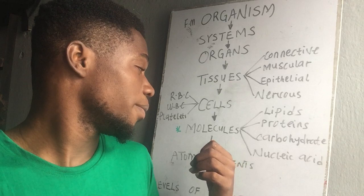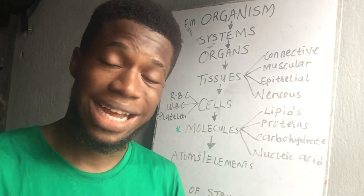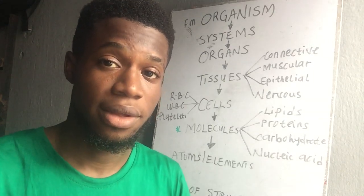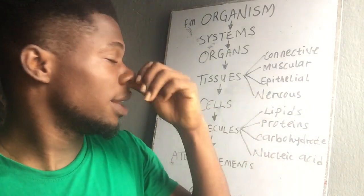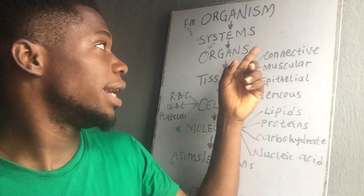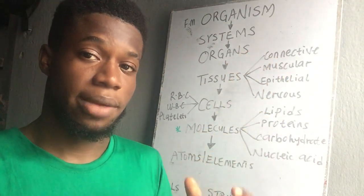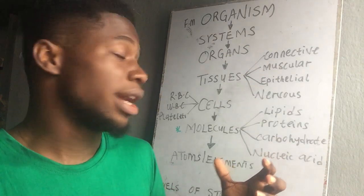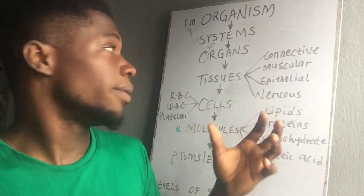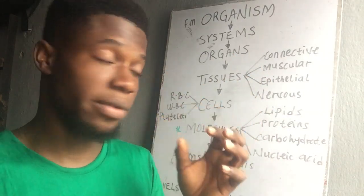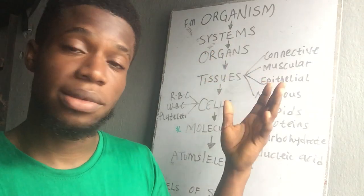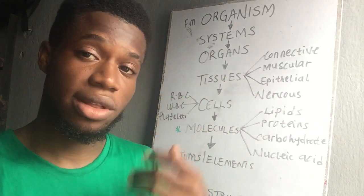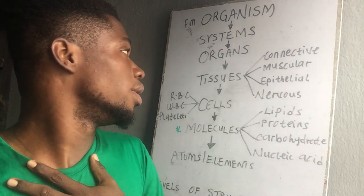Biochemistry is the study of life at the molecular level. When you're studying something like the heart — the organ level, the level you can see — that's called gross anatomy. If you're studying tissues, it's called histology. Histology is the study of tissues.